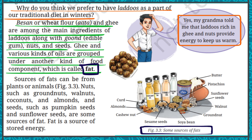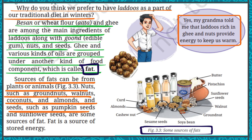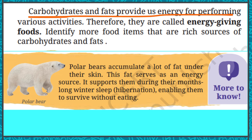Fat is a source of stored energy. While carbohydrates provide instant energy, fat stores energy in our body. When we fast or cannot eat for a long time, this stored fat provides the body with nutrients and energy. Both carbohydrates and fats give us energy — the difference is that carbohydrates give instant energy while fat provides stored energy for our body to use during various activities.